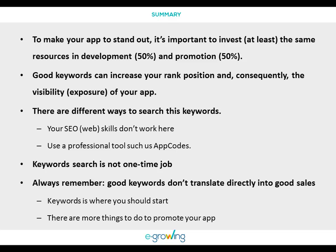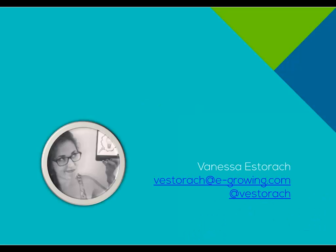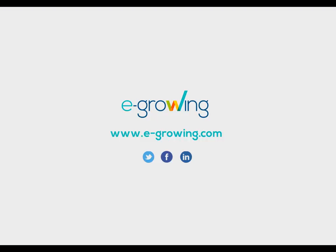To sum up: to make your app stand out, it's important to invest at least the same resources in development and promotion. Good keywords can increase your app rank position and, consequently, the visibility of your app. There are different ways to search for keywords and we've seen some of them. Keyword search is not a one-time job — we should do it every time we launch a new version of our app. Always remember: good keywords don't translate directly into good sales. Thank you very much for your attention, and if you have any questions, don't hesitate to contact me by email or Twitter.